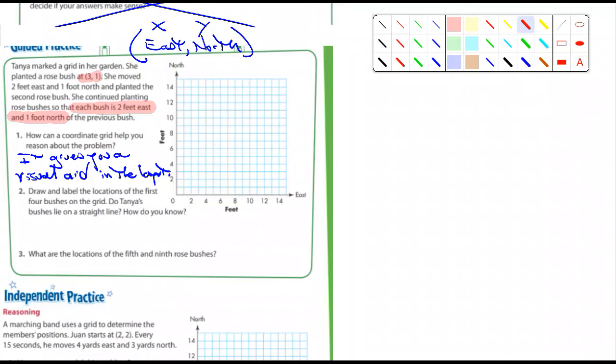Number two, it says draw and label the locations of the first four bushes on the grid. So, you need to do that. Remember, the first one is at 3-1. I'll go ahead and mark that. 3-1. Looks like it would be right there. And so, remember what I said earlier. Whenever possible, label each of the points. And I'm just going to put 3, 1. And draw and label the locations of the first four bushes. And then it asks you a question. Do Tanya's bushes lie in a straight line? How do you know? Well, if they do lie in a straight line, and you mark it on the grid correctly, you could see it.